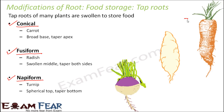The conical root has a broad base and tapers toward the apex — like a cone. The example is carrot: it has a broad base that gradually tapers toward the apex. The second type is fusiform. The word fusiform comes from the Latin word 'fusus,' meaning spindle — which is the rotational axis of a machine or screw.